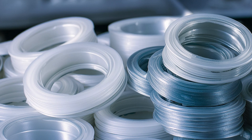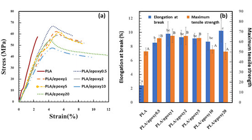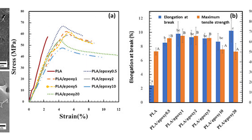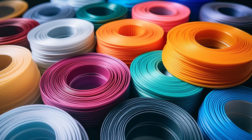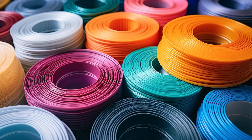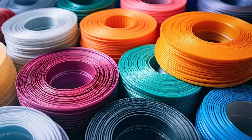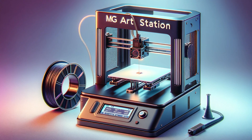PLA is known for its lightness, transparency, and ease of processing. It has high tensile strength and rigidity, but it has low impact resistance and limited thermal resistance, which can lead to deformation at high temperatures. Additionally, it has low resistance to moisture and water.